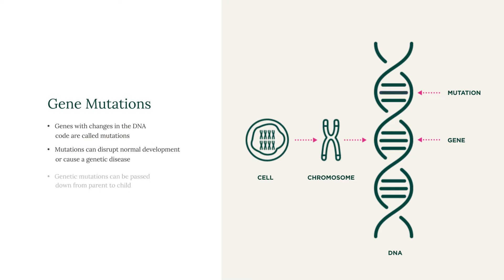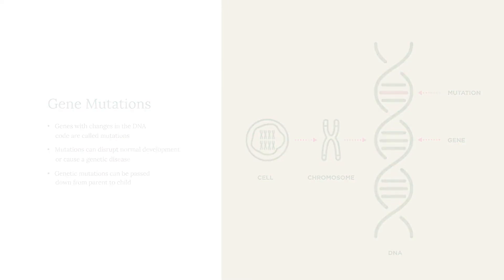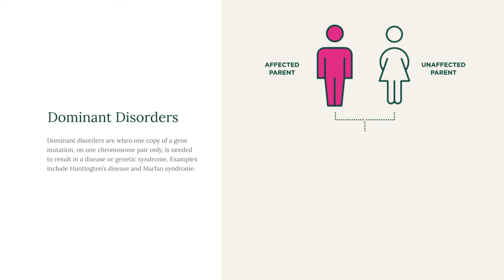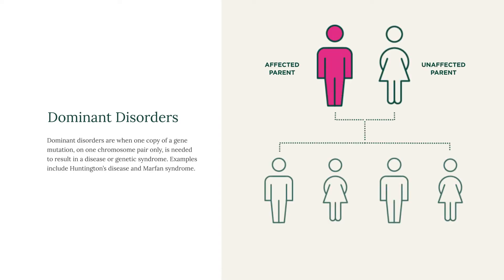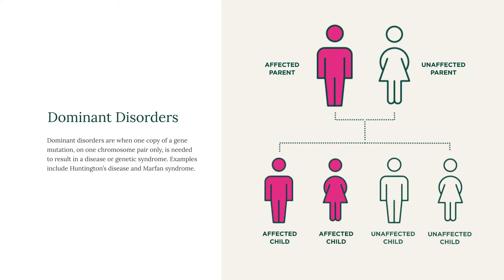Genetic mutations can also be passed down from parent to child. Dominant disorders are when one copy of a gene mutation is needed to result in a disease or syndrome. Examples of autosomal dominant disorders include Huntington disease and breast cancer.